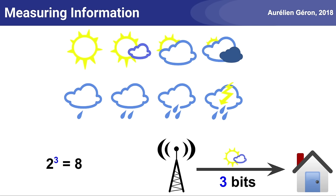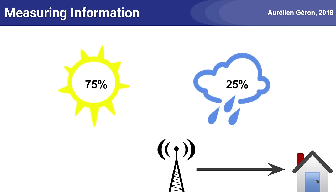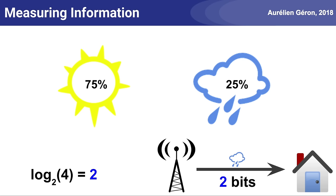It's easy to find the number of bits of information that were actually communicated by computing the binary logarithm of the uncertainty reduction factor, which in this example is 8. But what if the possibilities are not equally likely, say 75% chance sunny and 25% chance rainy? If the weather station tells you it's going to be rainy tomorrow, then your uncertainty has dropped by a factor of 4, which is 2 bits of information. The uncertainty reduction is just the inverse of the event's probability — in this case, the inverse of 25% is 4.